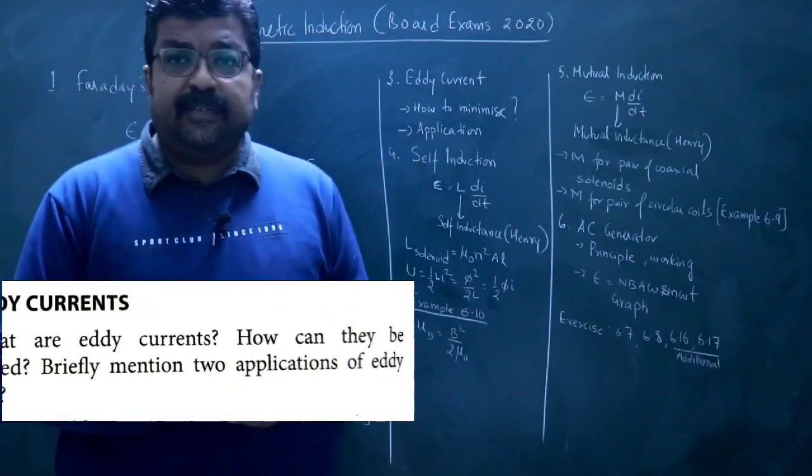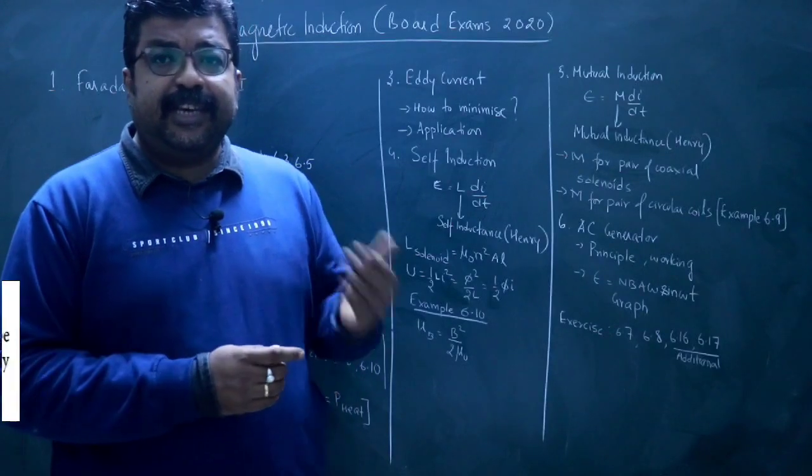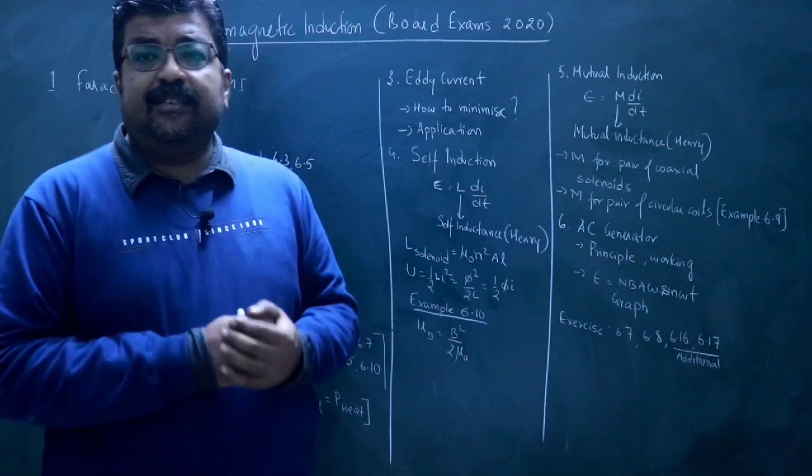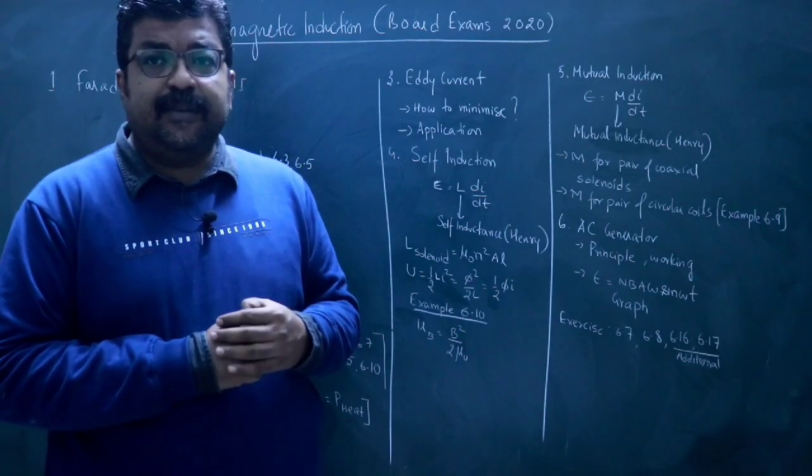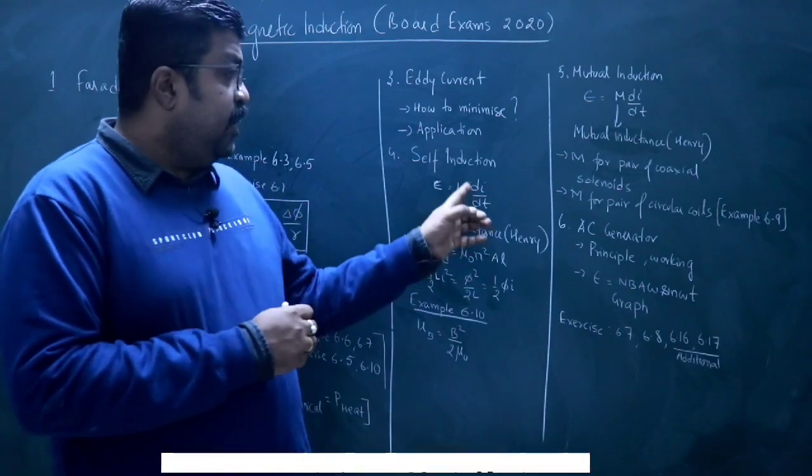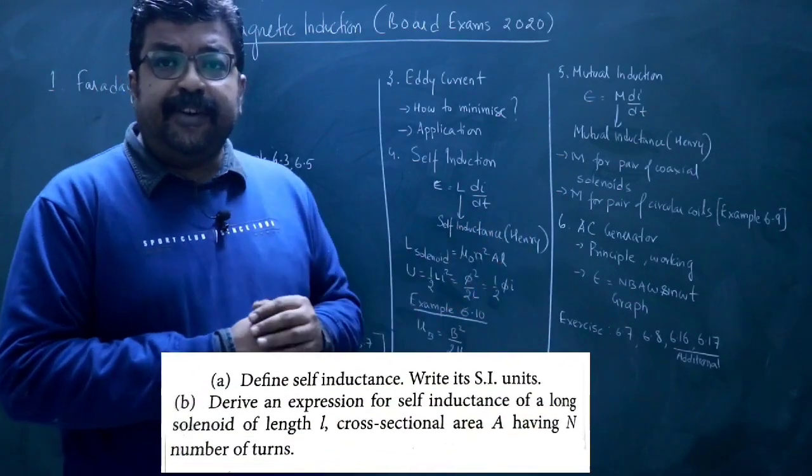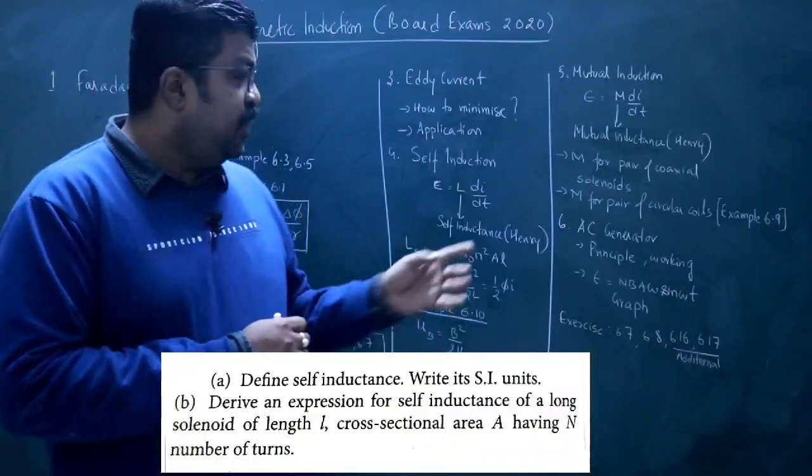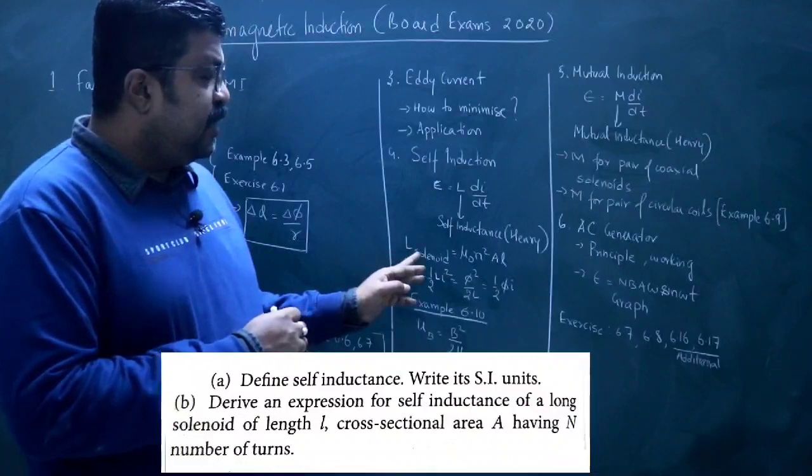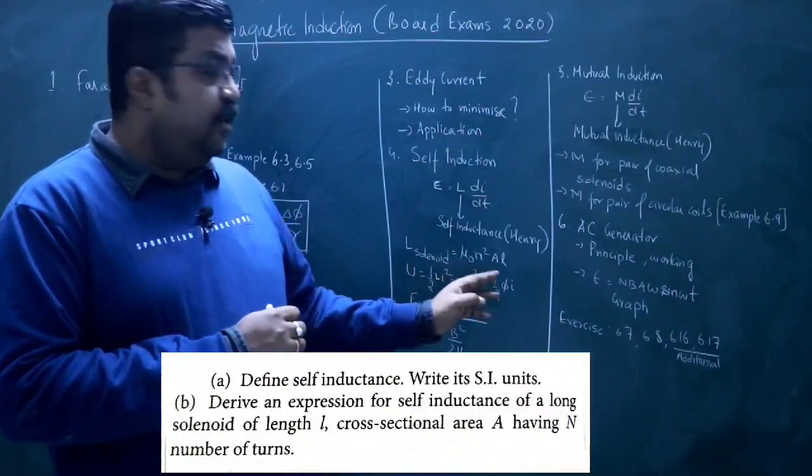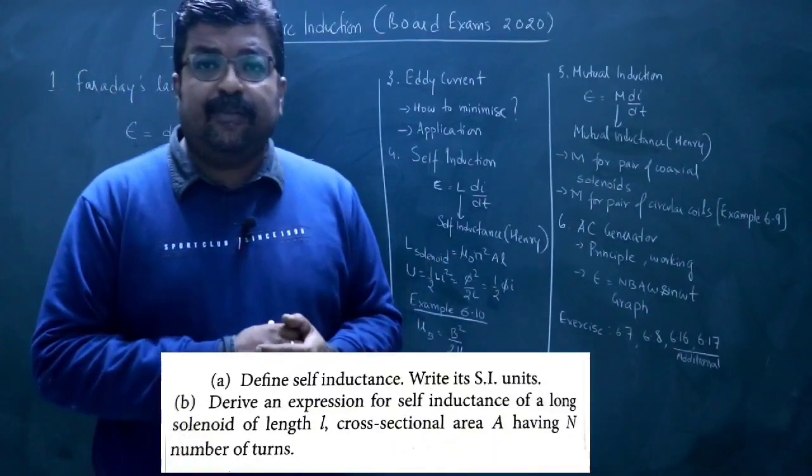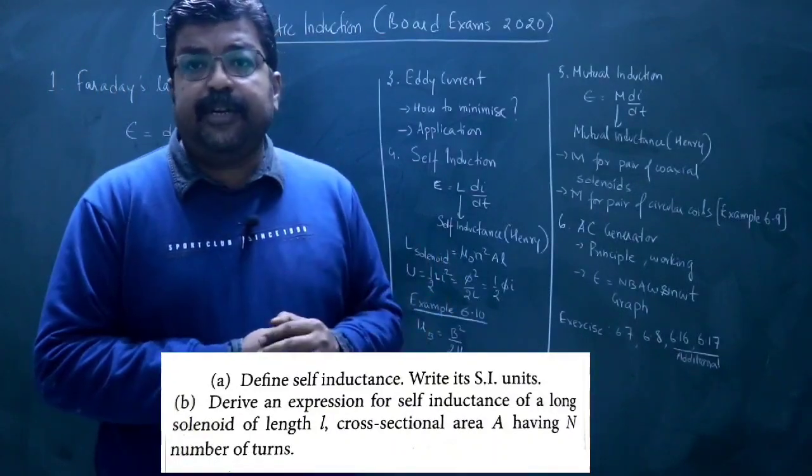Next topic is self-induction. So you will learn what is self-induction. Phi is equal to Li, L is self-inductance or coefficient of self-inductance. Then E is equal to L di by dt. L is self-inductance and its unit is Henry. So how can we define the 1 Henry? That definition you can see. The next expression is self-inductance of a solenoid, mu naught N square A by L. This is cross-sectional area and L is the length of the solenoid. This is very important because we have asked many times.